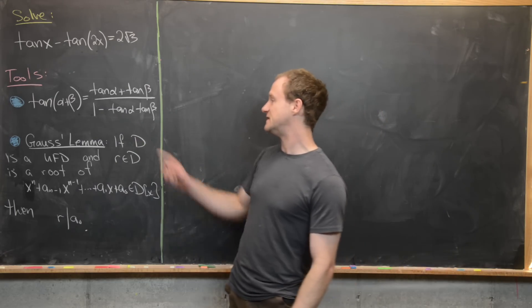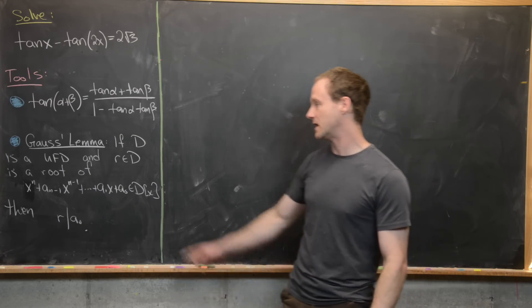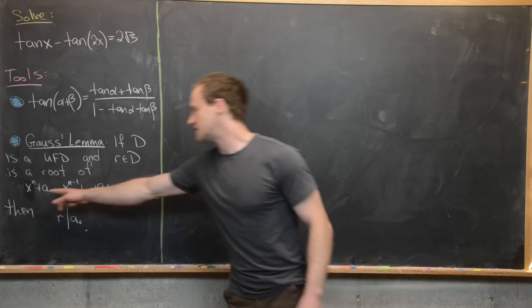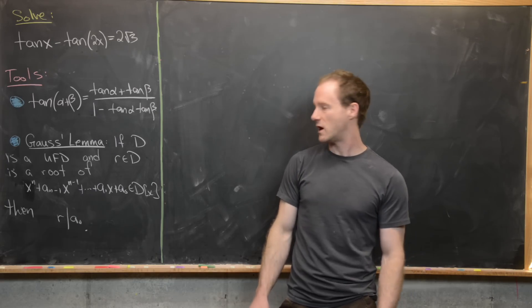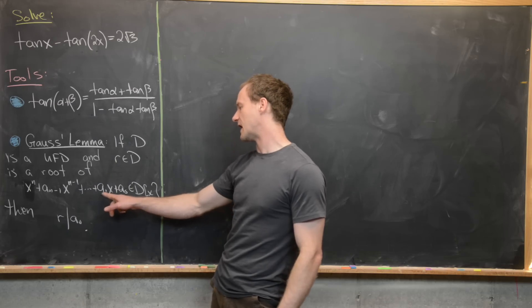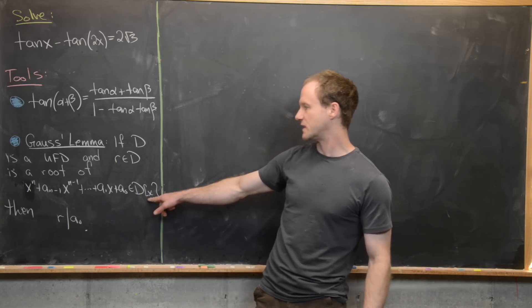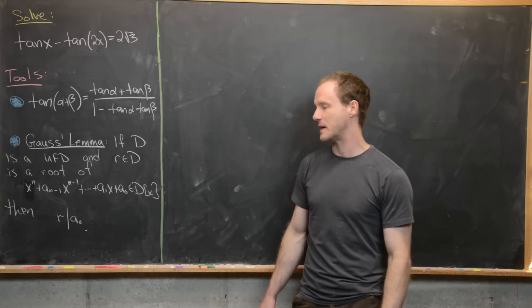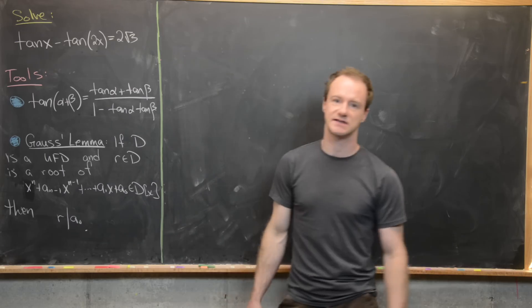Gauss's lemma says that if D is a UFD — a unique factorization domain — and r in D is a root of the monic polynomial x to the n plus a_{n-1} x^{n-1} all the way down to a_1 x plus a_0, a polynomial with coefficients in the UFD, then the root must divide the constant term.